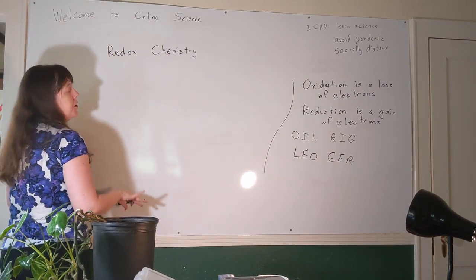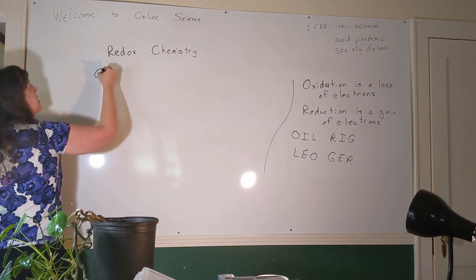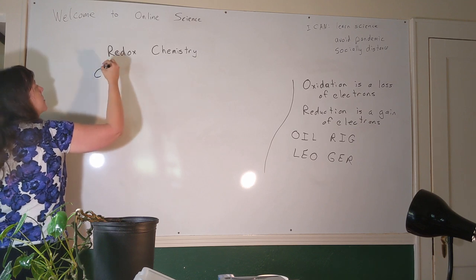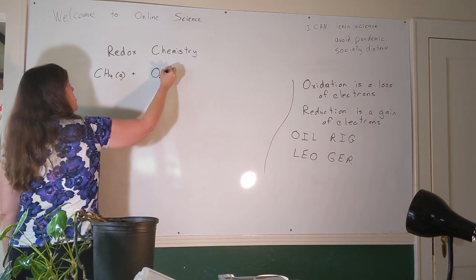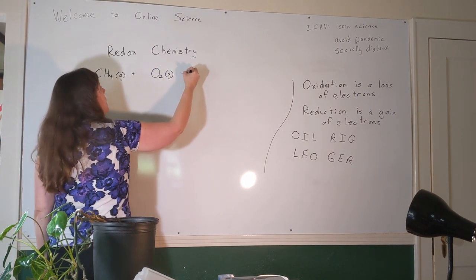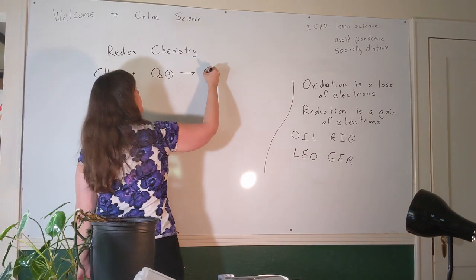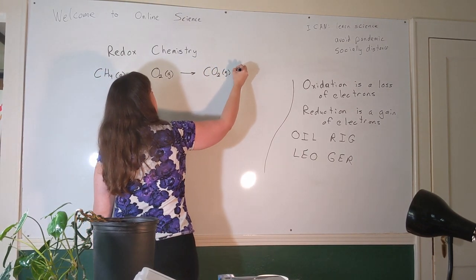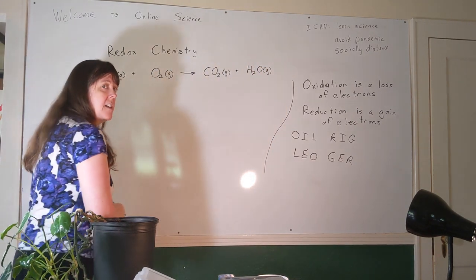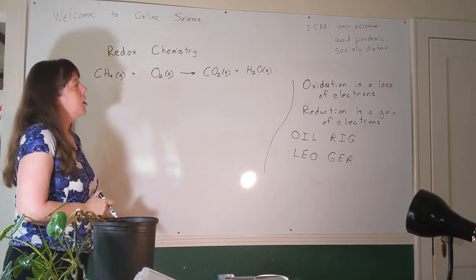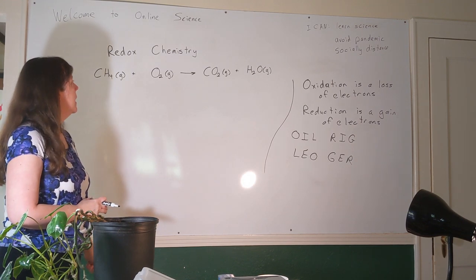Let's think about a combustion reaction. The combustion reaction we've done most often is the combustion of methane. Methane is a gas with formula CH₄. We add oxygen gas. Combustion always creates the same products — carbon dioxide and water — and we'll write the water as a gas because this reaction creates a lot of heat, so the water is in vapor form.